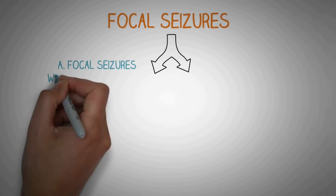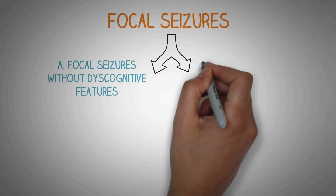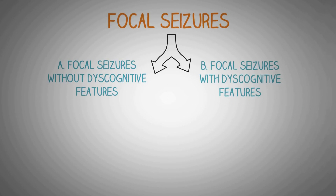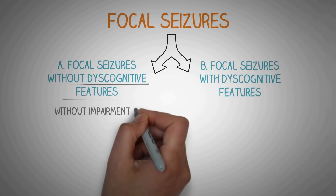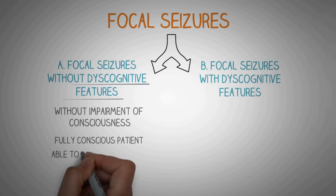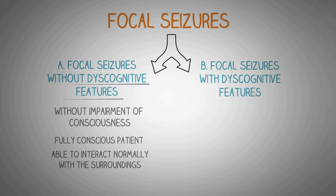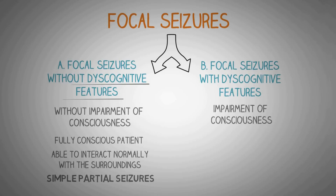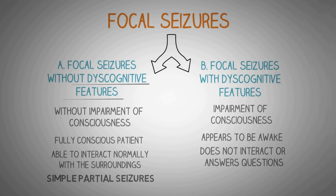Focal seizures can also be differentiated into two types: focal seizures without discognitive features and focal seizures with discognitive features. The discognitive features mainly involve impairment of consciousness. In the first category, the patient does not have any impairment of consciousness and is fully conscious during the seizure, able to interact normally — these were previously classified as simple partial seizures. In the second type, the patient exhibits marked impairment of consciousness but not complete loss of consciousness; the patient appears awake but does not interact or answer questions — these were previously classified as complex partial seizures.